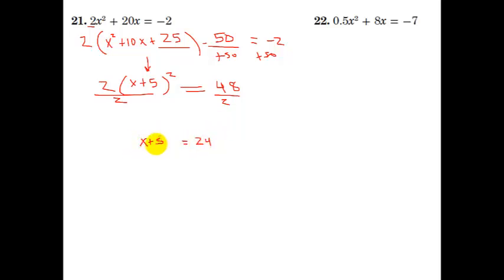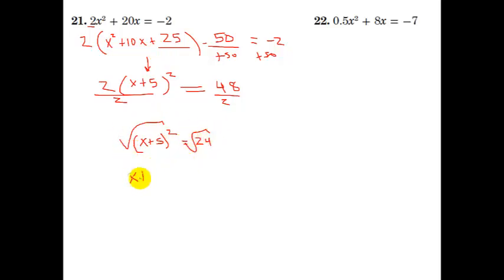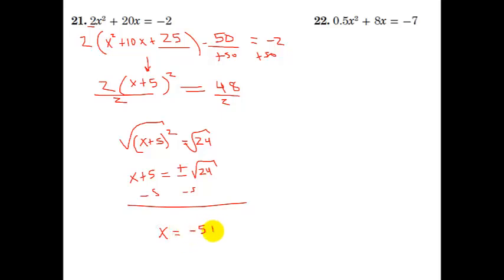And now I have (x + 5) squared equals 24. This is not a perfect square, which is important — as we saw in the other problems, we could have solved by factoring if it came out nicely. But this one you couldn't solve by factoring because it's going to come out as a radical. So take the square root of both sides: x plus 5 equals plus or minus the square root of 24. Minus 5 on both sides, and our answer is x equals negative 5 plus or minus the square root of 24.